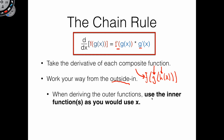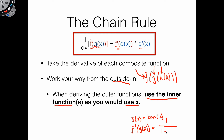One of the more important things is that when deriving the outer functions, you use the inner functions as you would use x. In other words, when you take the derivative of the outermost thing, you don't just take the derivative of f of x — you take the derivative of f of g of x. For example, if f of x equals tangent of x, then f prime of g of x would equal 1 over 1 plus g of x squared. You have to keep that in mind. Then you take the derivative of g of x — you've got to keep that function in as long as you have an inner function.